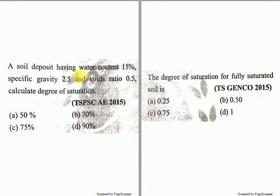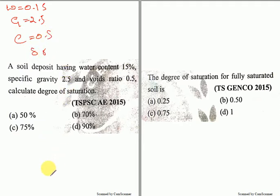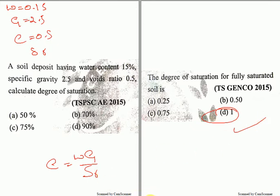The soil deposit has water content equal to 0.15, specific gravity is 2.5, void ratio is equal to 0.5 — they are asking us to find the degree of saturation. Again using E equals WG by SR, please comment the answer in the comment section. The degree of saturation of the fully saturated soil is 1 — I have told you many times.